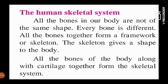Now let us study the human skeletal system. All the bones in a body are not the same shape — every bone is different. All the bones together form a framework or skeleton, and the skeleton gives a shape to the body. All the bones of the body along with the cartilage together form the skeletal system. Just like when making a lantern we first make a framework by joining sticks, our body also requires a framework of bones to give it shape and support.